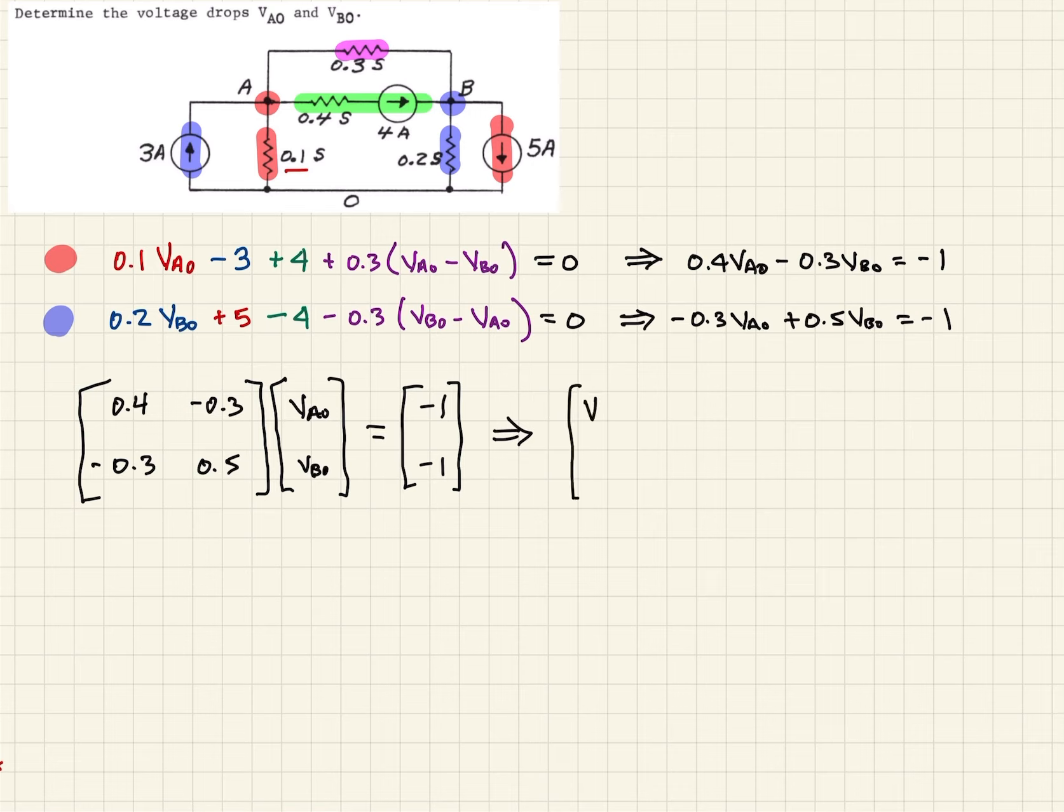We will have VA0 VB0 is equal to minus 1 minus 1 array divided by 0.4 minus 0.3 minus 0.3 and 0.5 divided by that matrix.